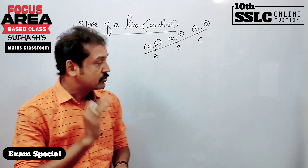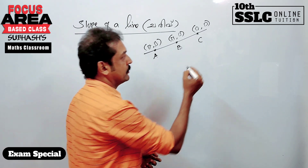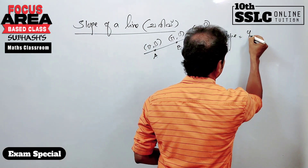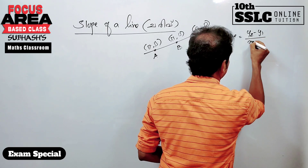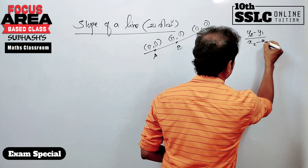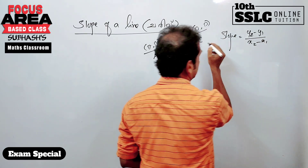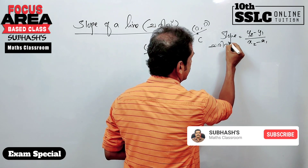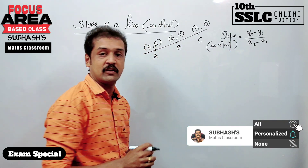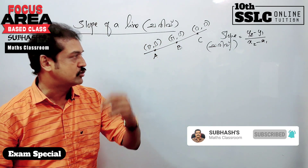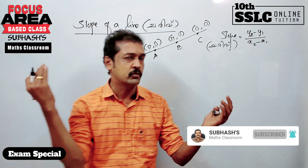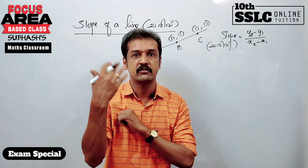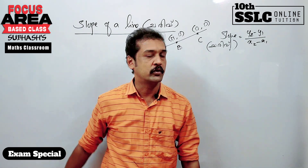Therefore, that answer is the name of the slope. The formula is called y2 minus y1 by x2 minus x1. This is the formula — y-coordinates difference divided by x-coordinates difference. This is the slope.